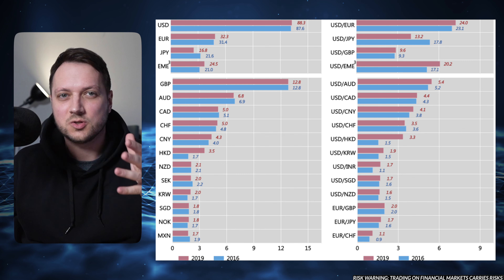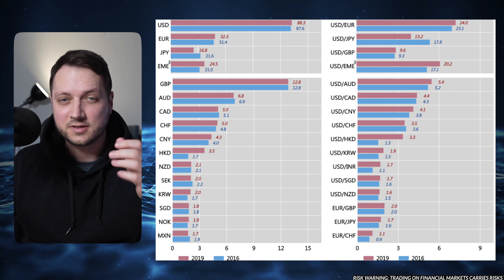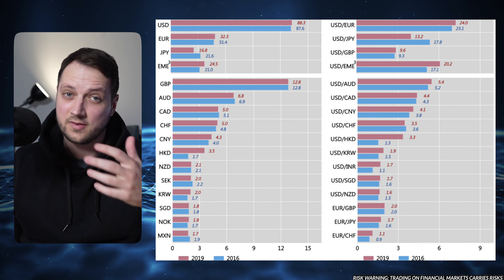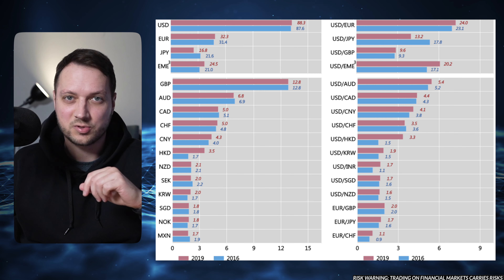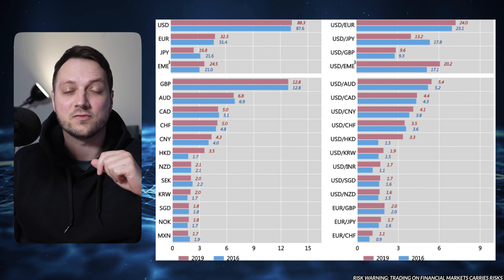Its main competitors, USD-JPY (the US dollar against the Japanese yen) and GBP-USD (the British pound against the US dollar), account for about 13% and 9% respectively. Therefore, the Euro-USD is the most liquid currency pair traded. From 2016 to 2019, the Forex daily trading volume increased from $5.1 trillion to $6.6 trillion, while the Euro-USD share increased by almost 1%, making it about $600 billion right now.